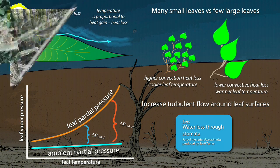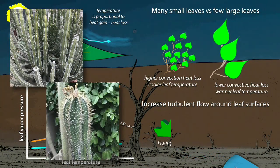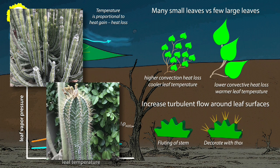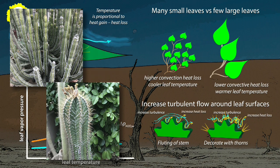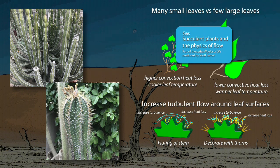Many of the odd shapes of desert plants, such as deep fluting or the presence of thorns, are common ways that desert plants enhance turbulent cooling of leaves in hot and sunny conditions. You can see more about that in another video.